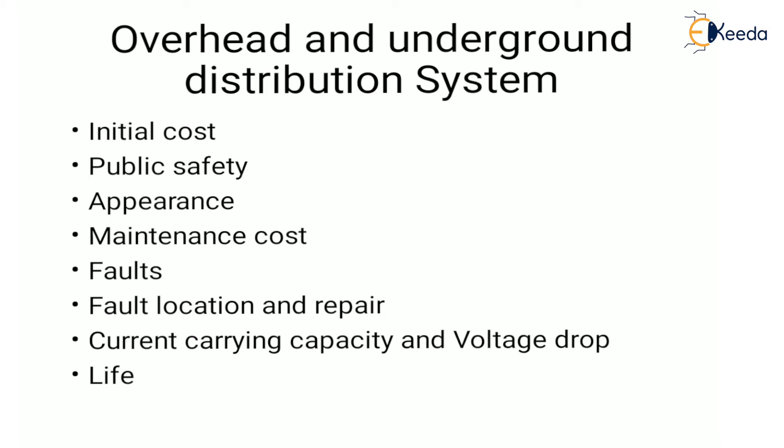Maintenance cost of the underground system is low compared to the overhead system because there are fewer chances of fault and interruption of supply. Regarding faults, underground cables have fewer chances of faults as the cables are laid underground and provided with better insulation. For fault location and repair, if a fault occurs in an underground cable it is very difficult to locate and repair, whereas for the overhead system the conductors are visible and easily accessible.